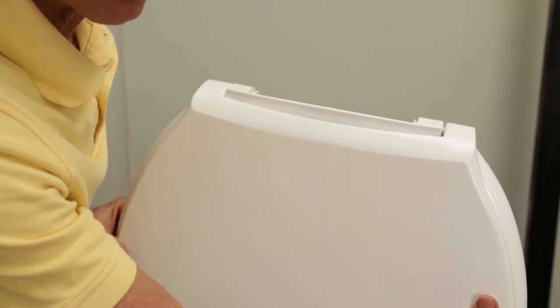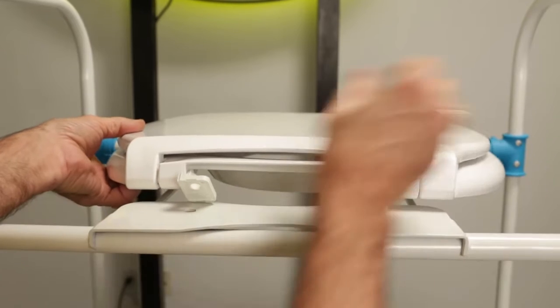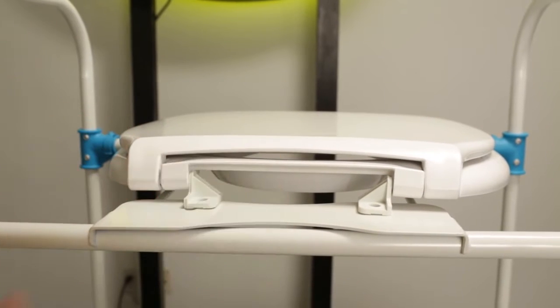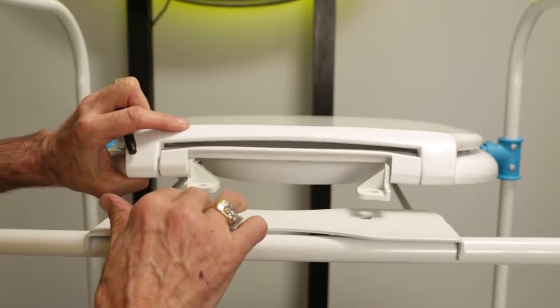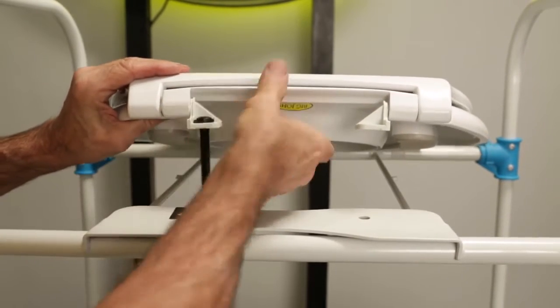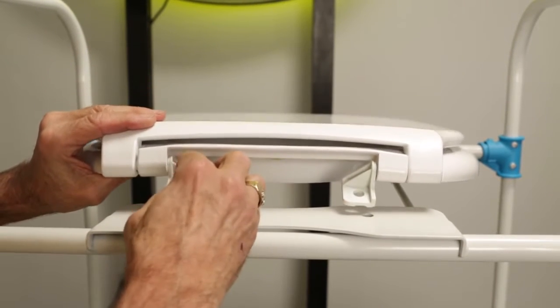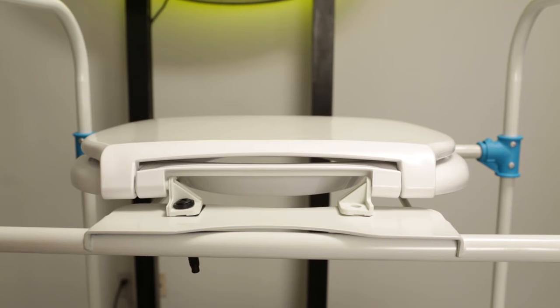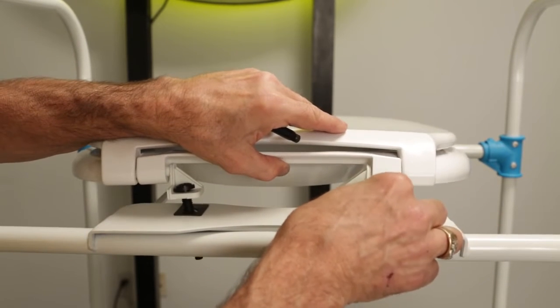And then place it on the commode chair. Put a gasket under the hinge and put the screw right through the hinge into the chair. And do the same on the other side.